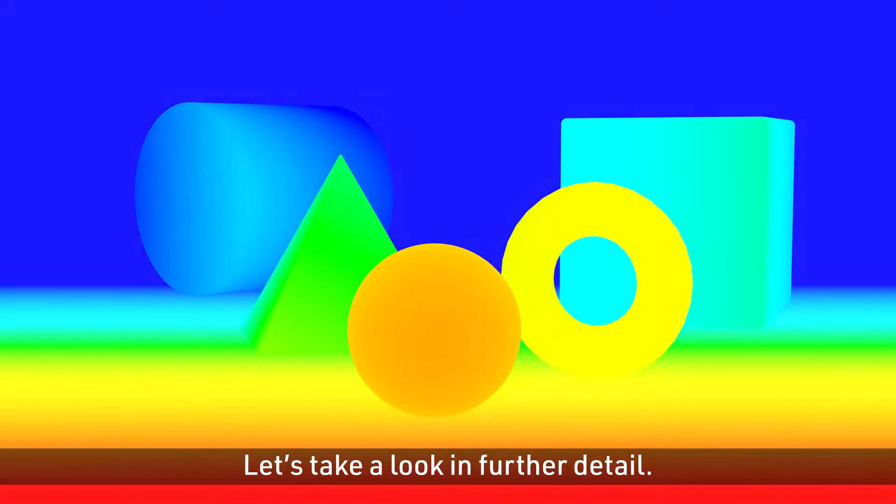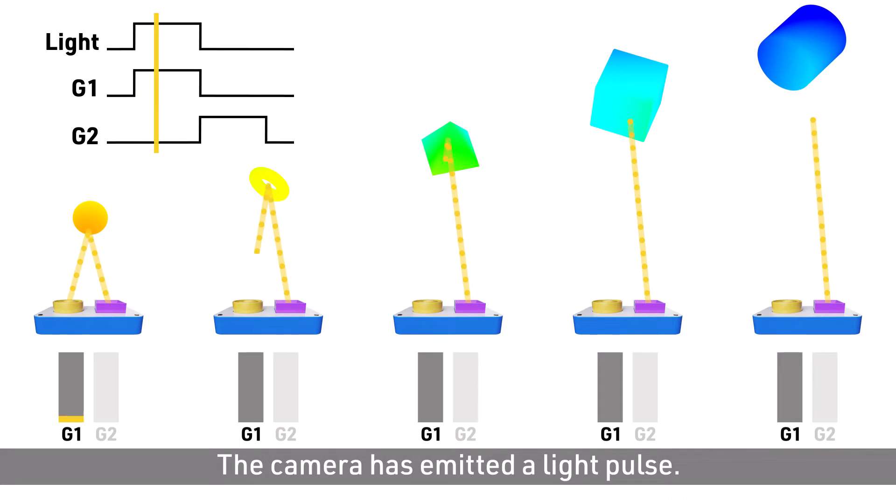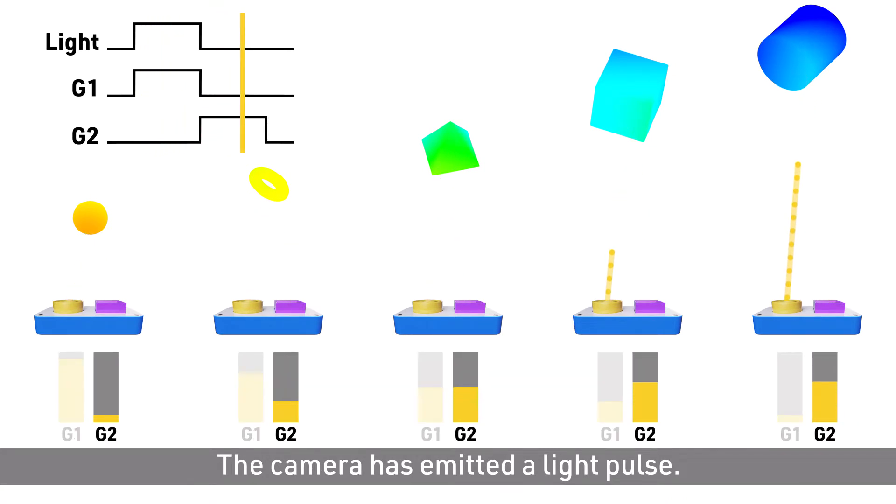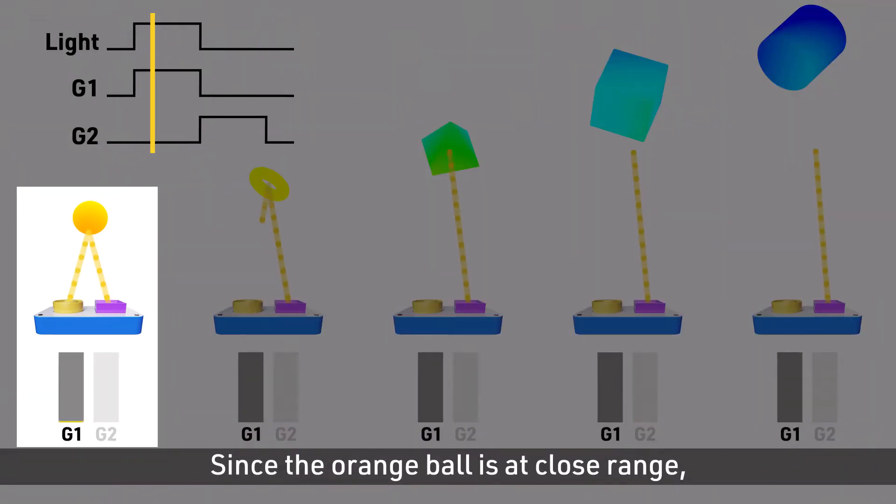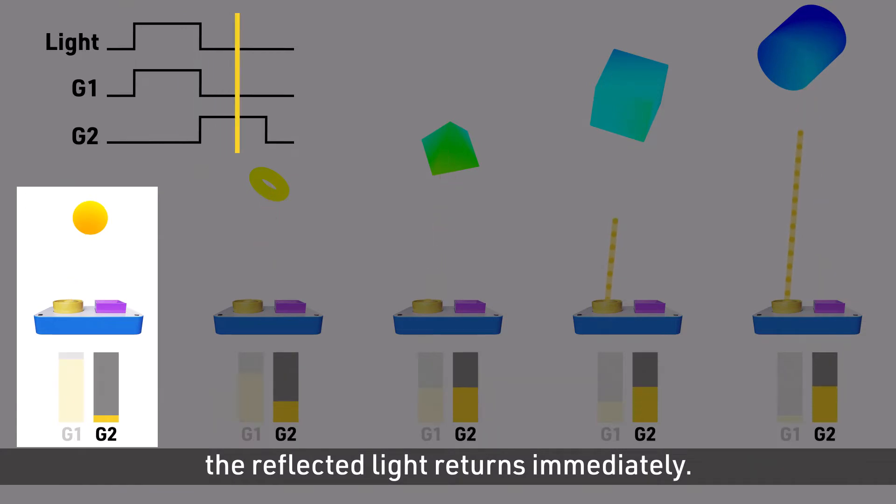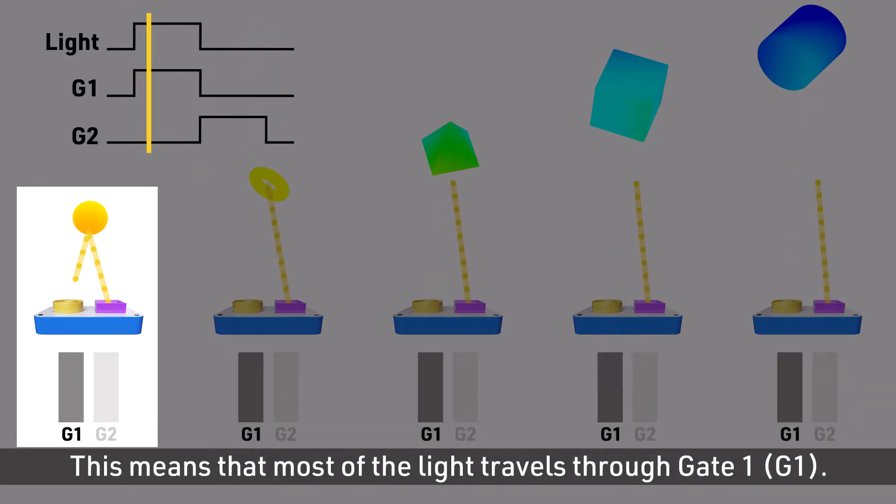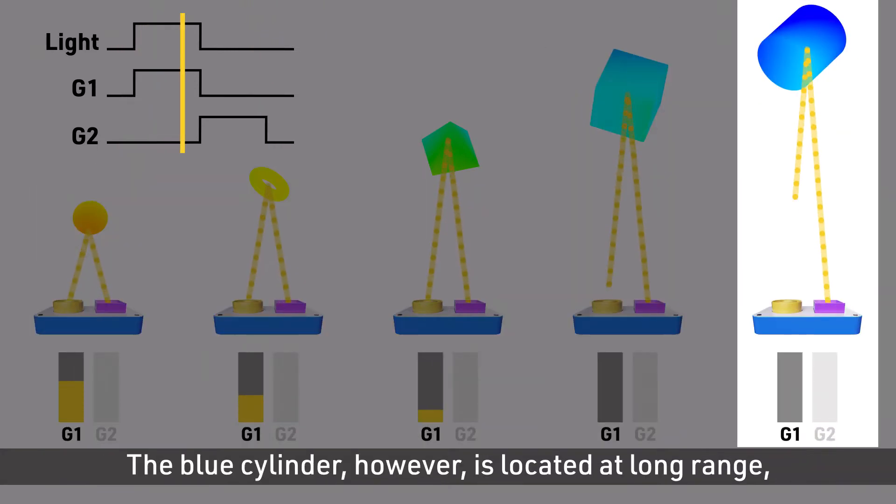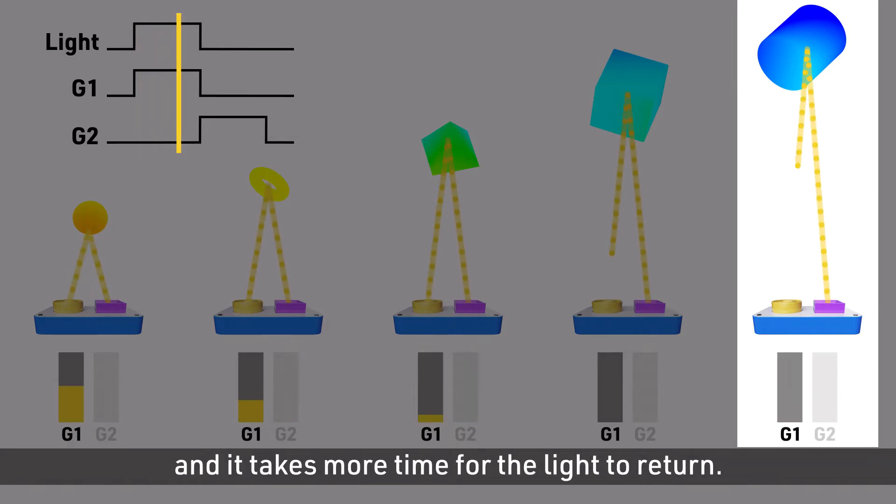Let's take a look in further detail. The camera has emitted a light pulse. Since the orange ball is at close range, the reflected light returns immediately. This means that most of the light travels through gate 1. The blue cylinder, however, is located at long range, and it takes more time for the light to return. Thus, most of the light travels through gate 2.